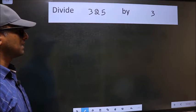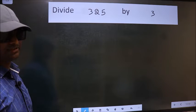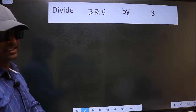Divide 325 by 3. To do this division, we should frame it in this way.